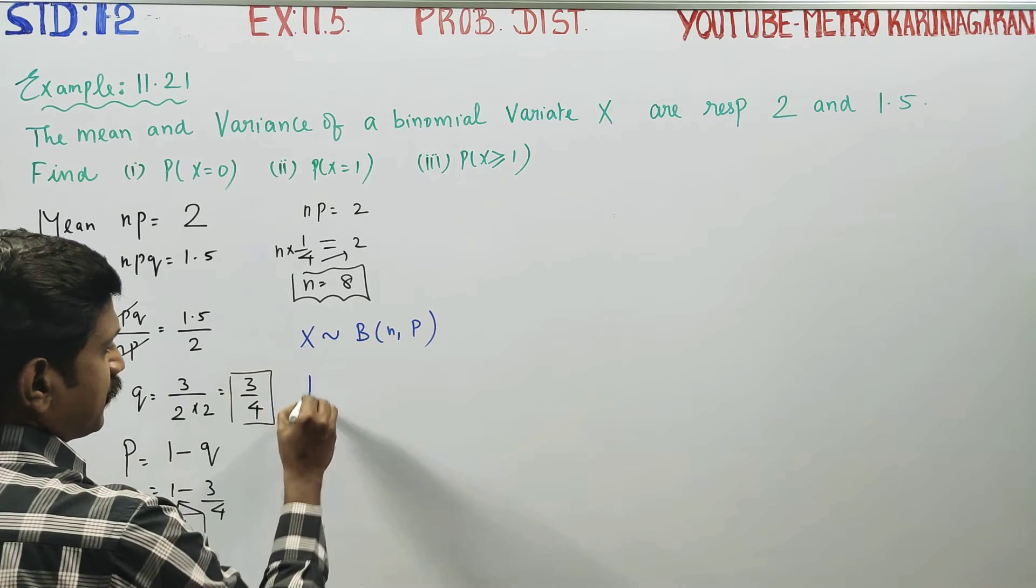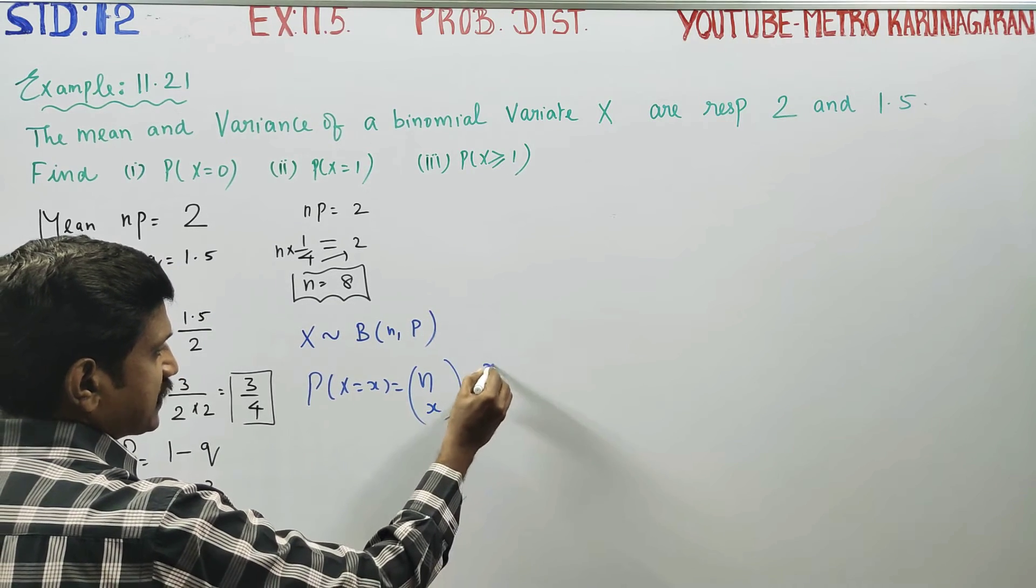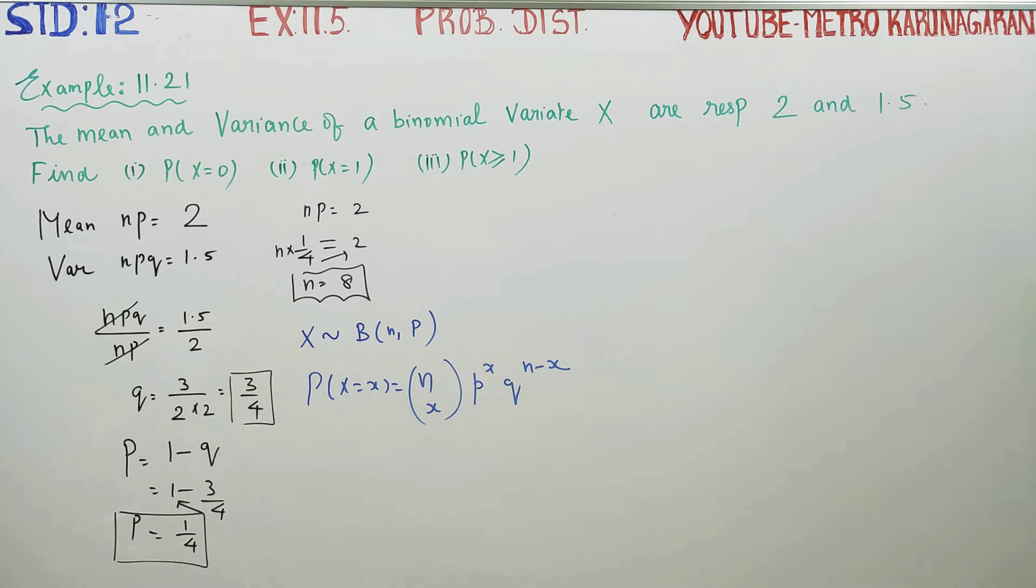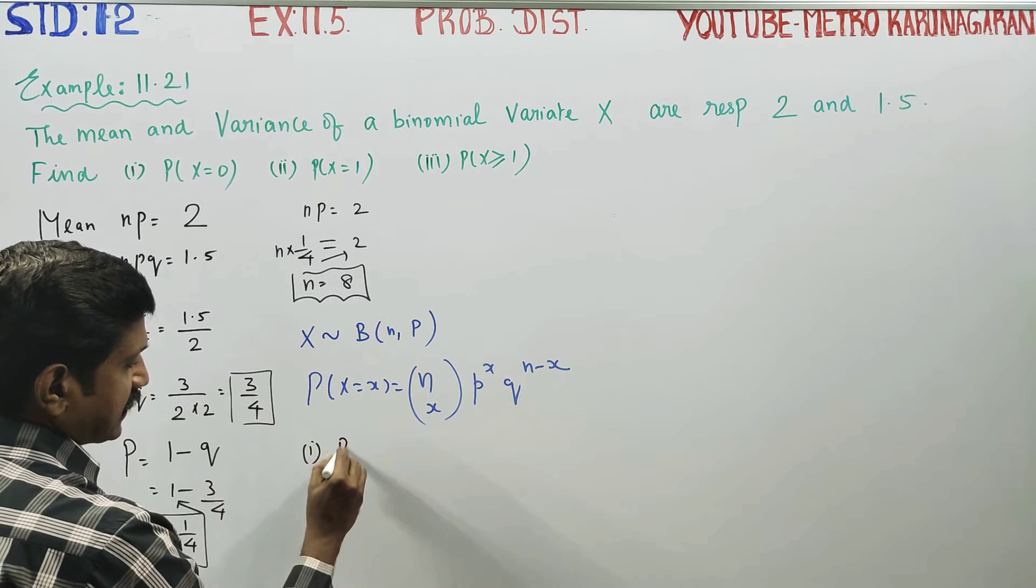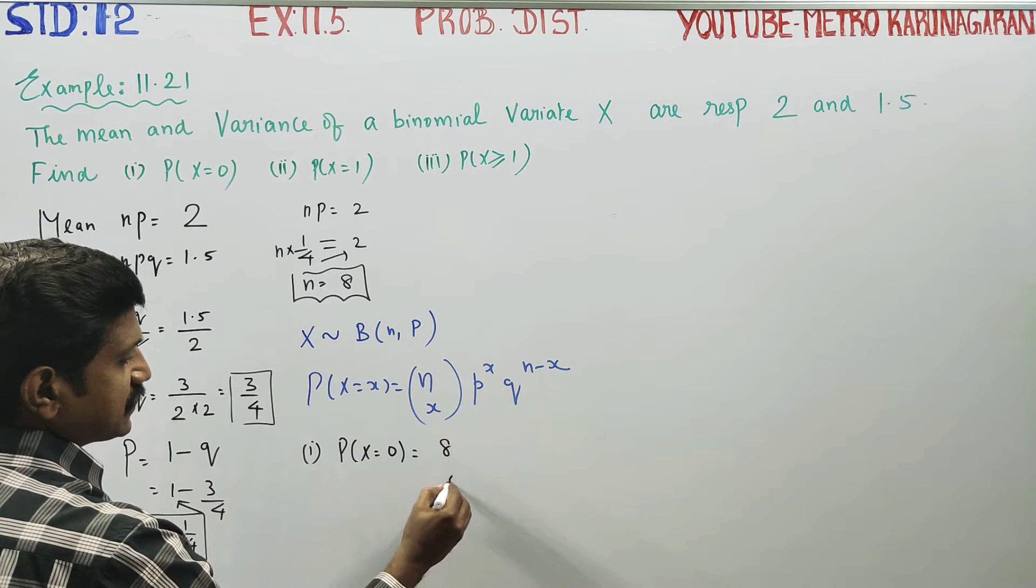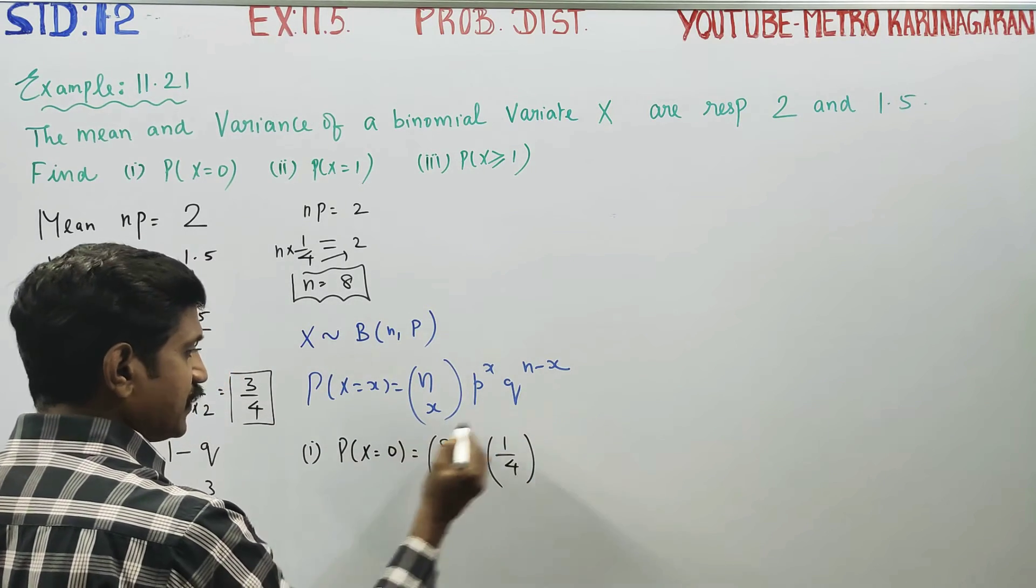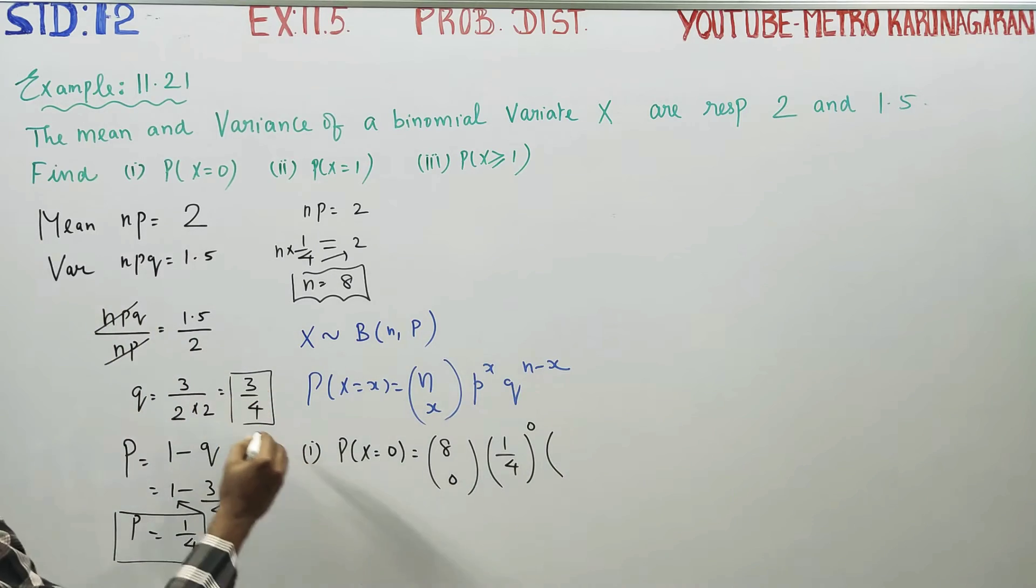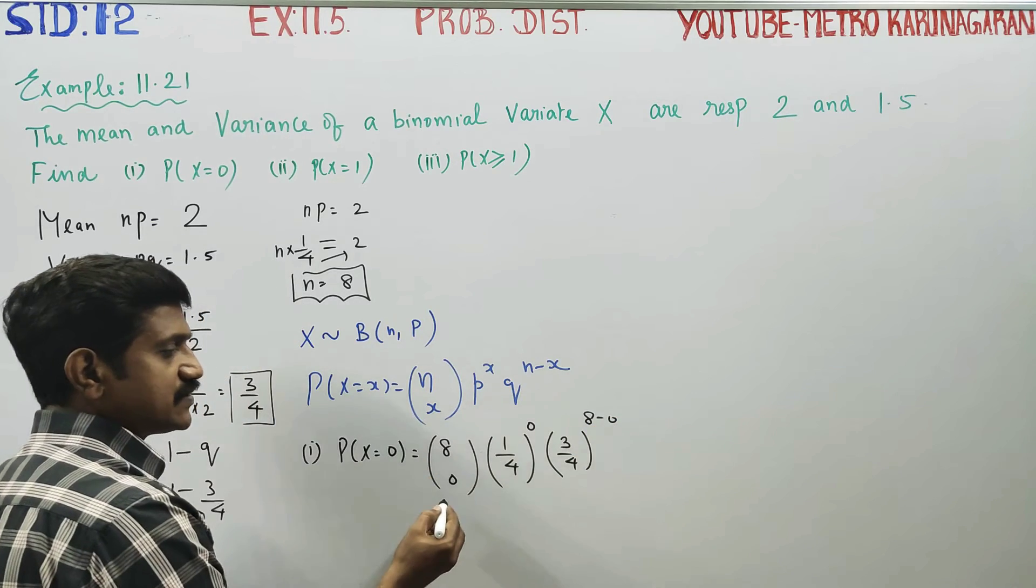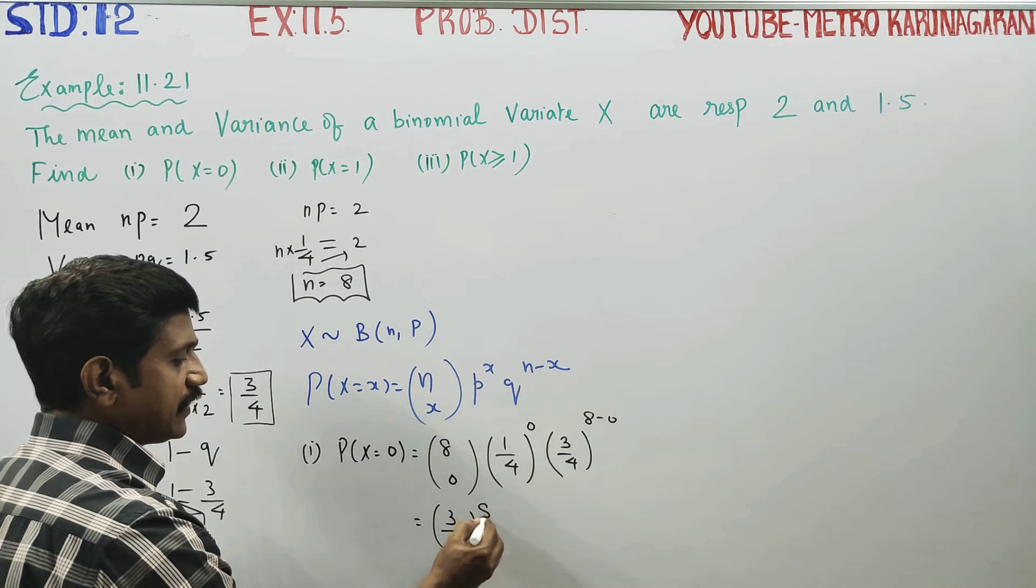The formula is nCx, p power x, q power n minus x. First substitution is x is equal to 0. P of x equal to 0 is 8C0, p power 1 by 4 power x, x value 0. q is 3 by 4, 3 by 4 power n minus x, 8 minus 0. 8C0 is 1 and anything power 0 is 1. Now, 3 by 4 whole power 8 is my first answer.